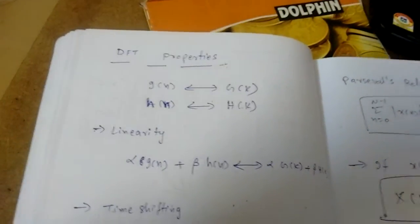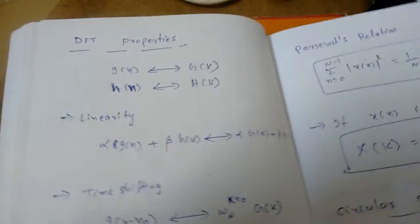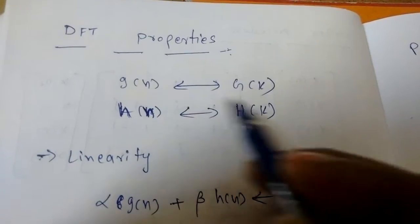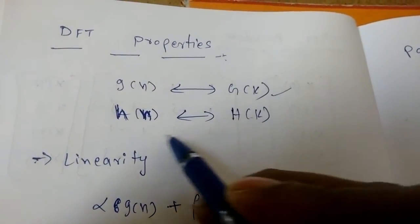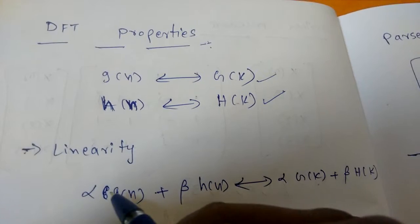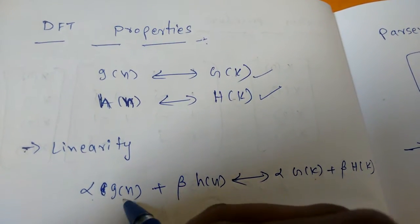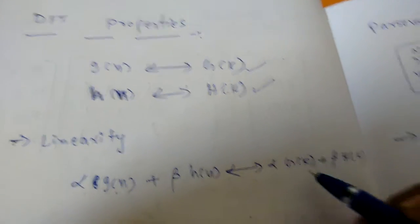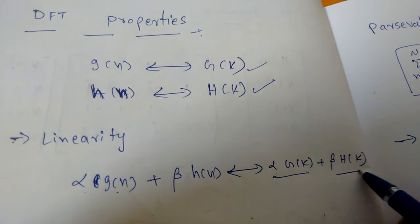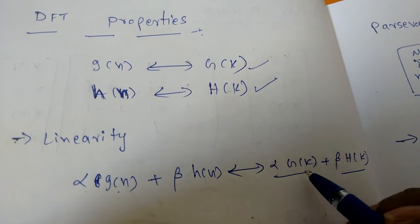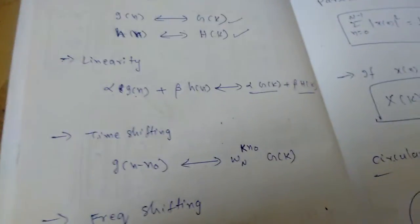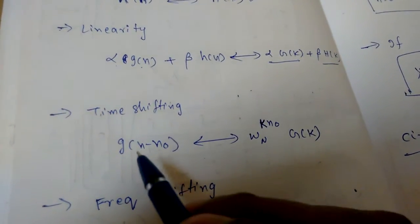In this lecture I am going to discuss the DFT properties. If G(n) has DFT G(K) and H(n) has DFT H(K), the first property is linearity: alpha·G(n) + beta·H(n) has DFT alpha·G(K) + beta·H(K).